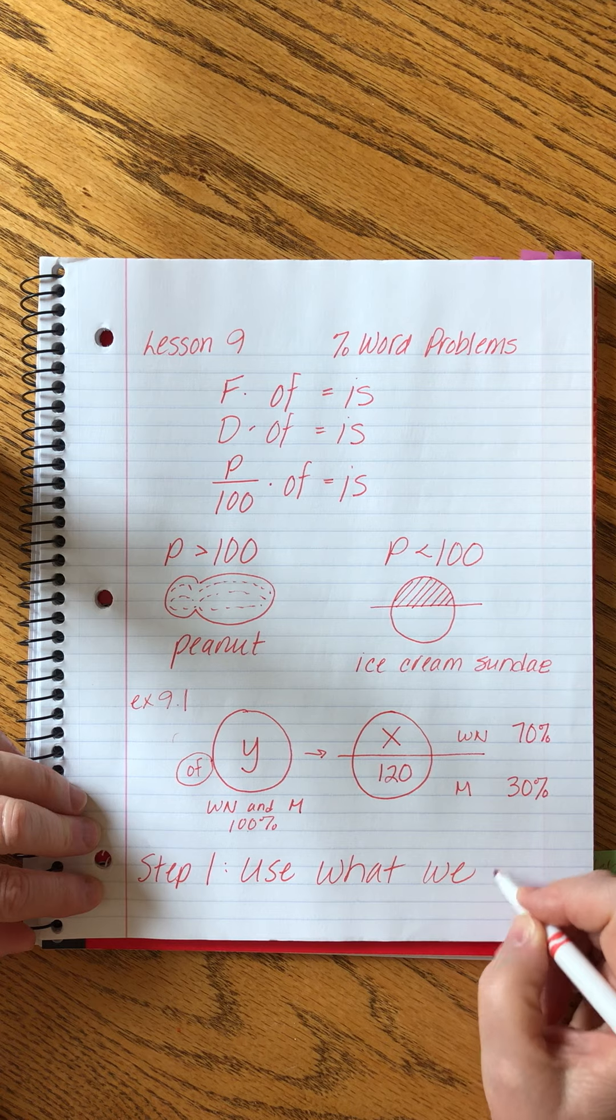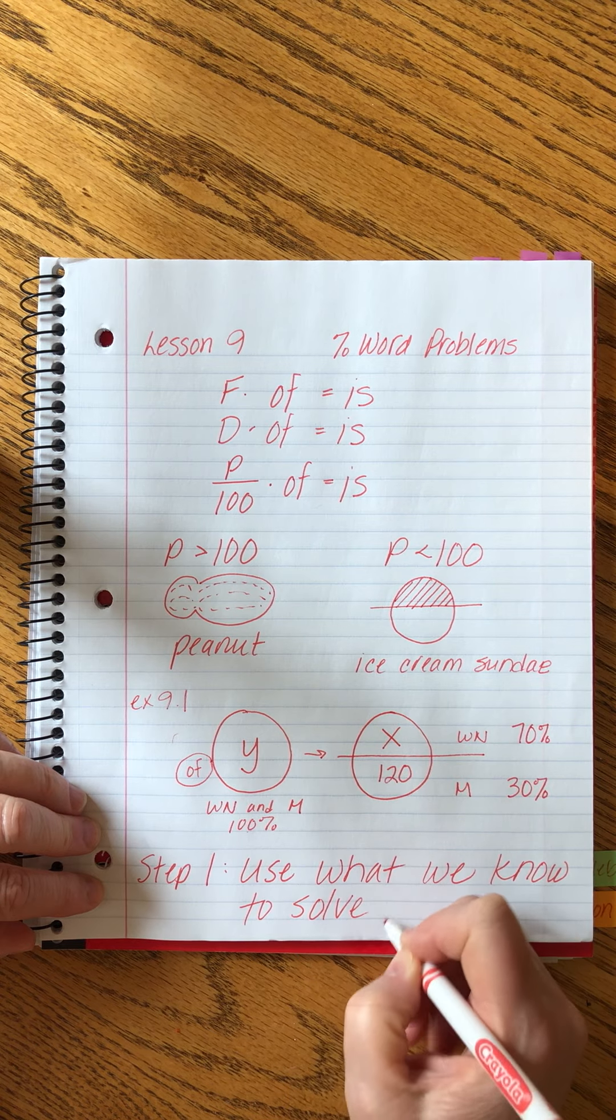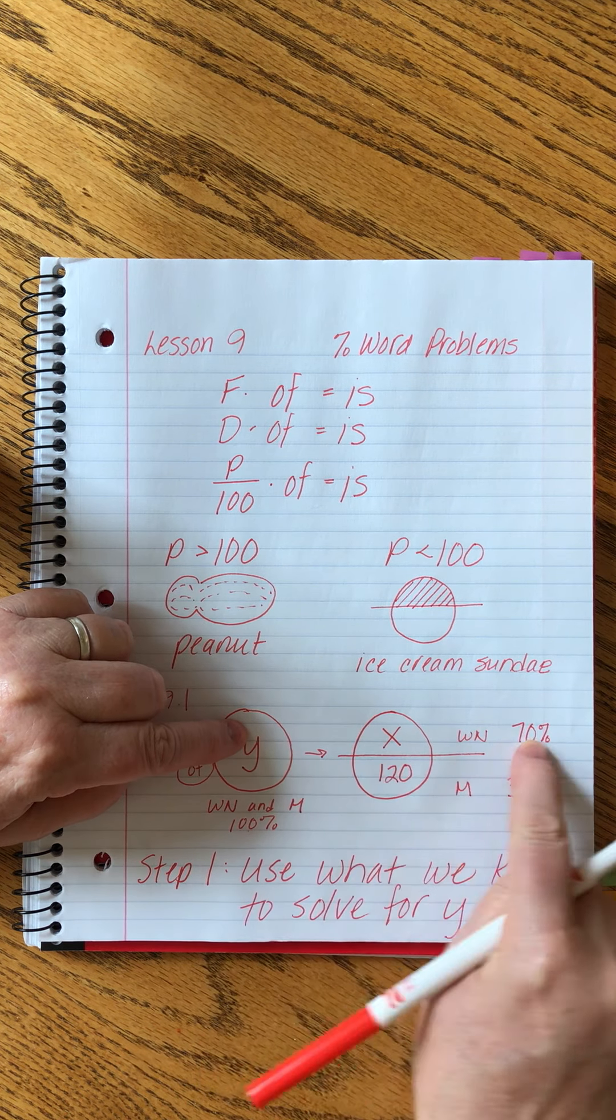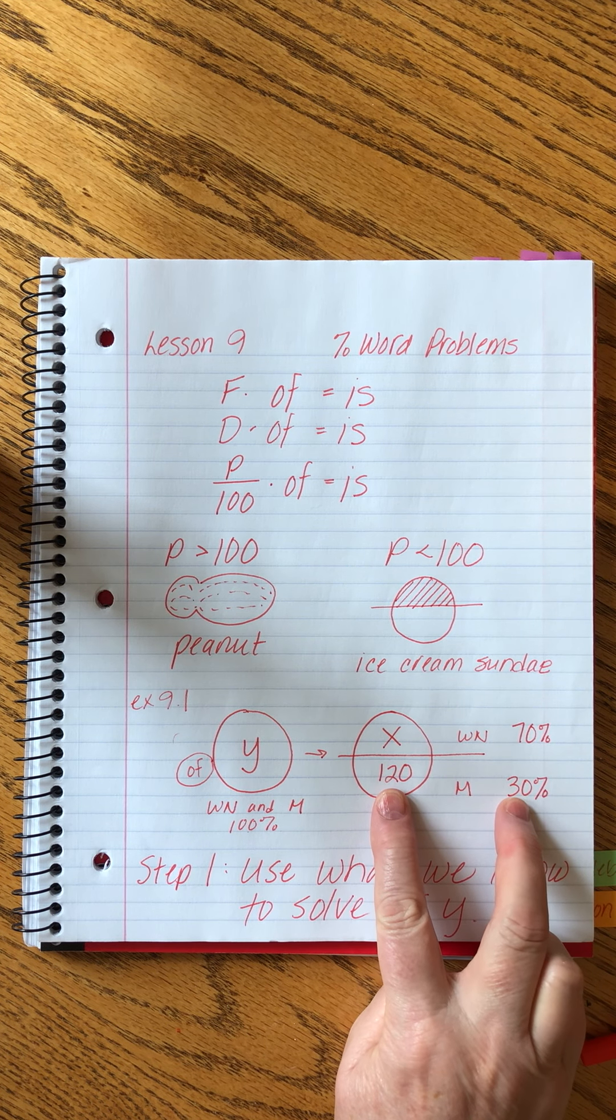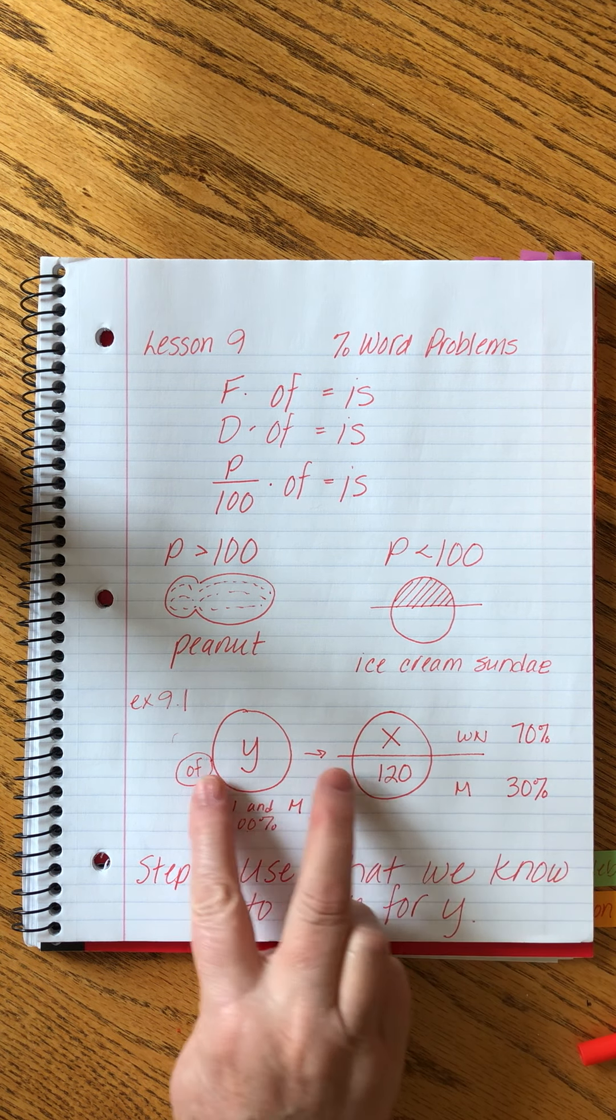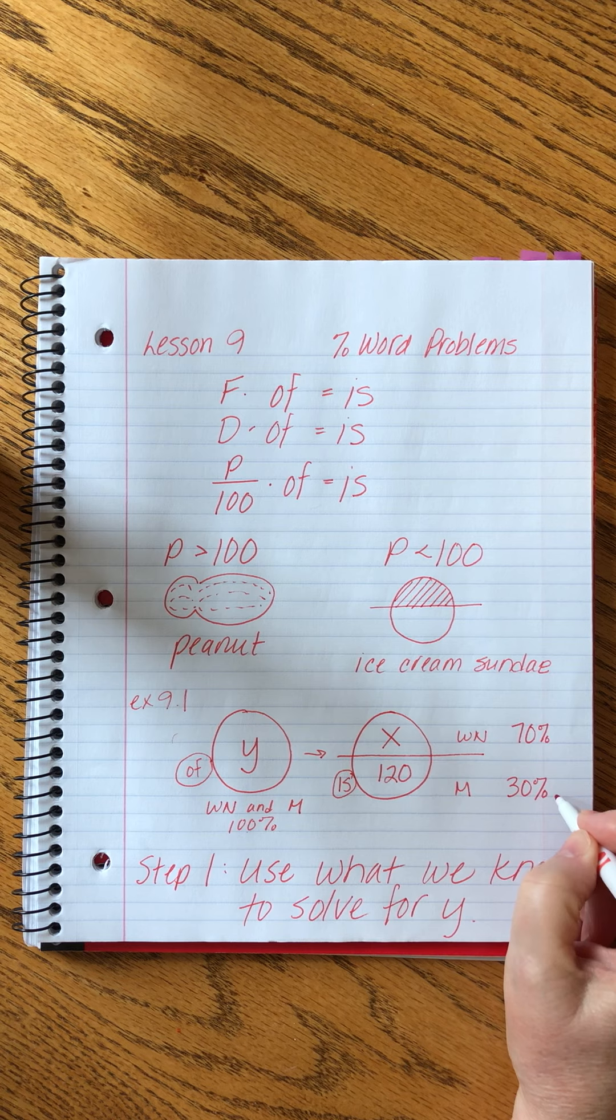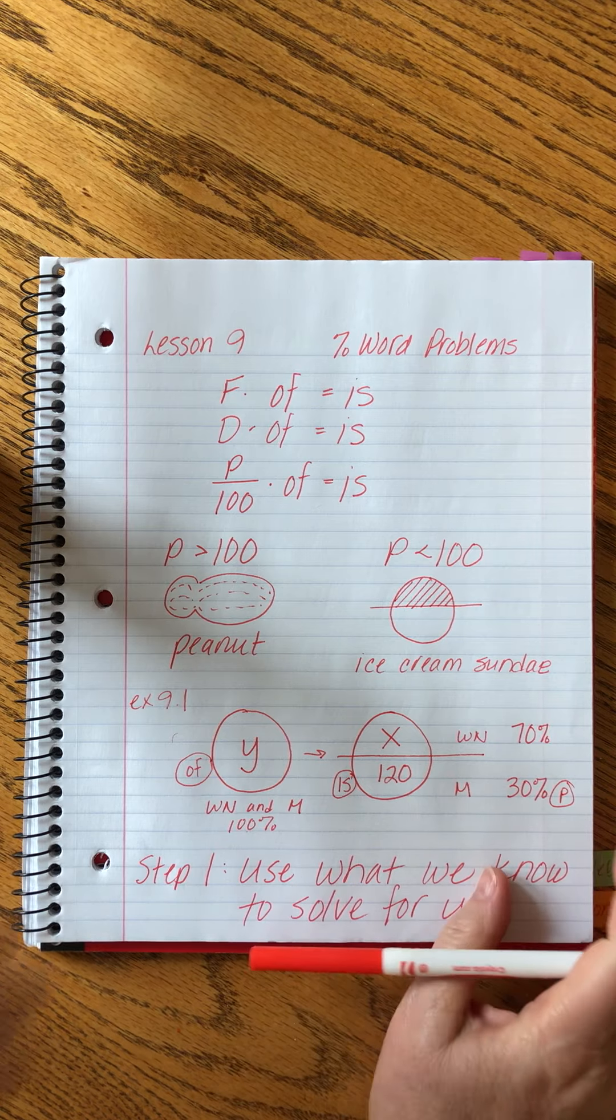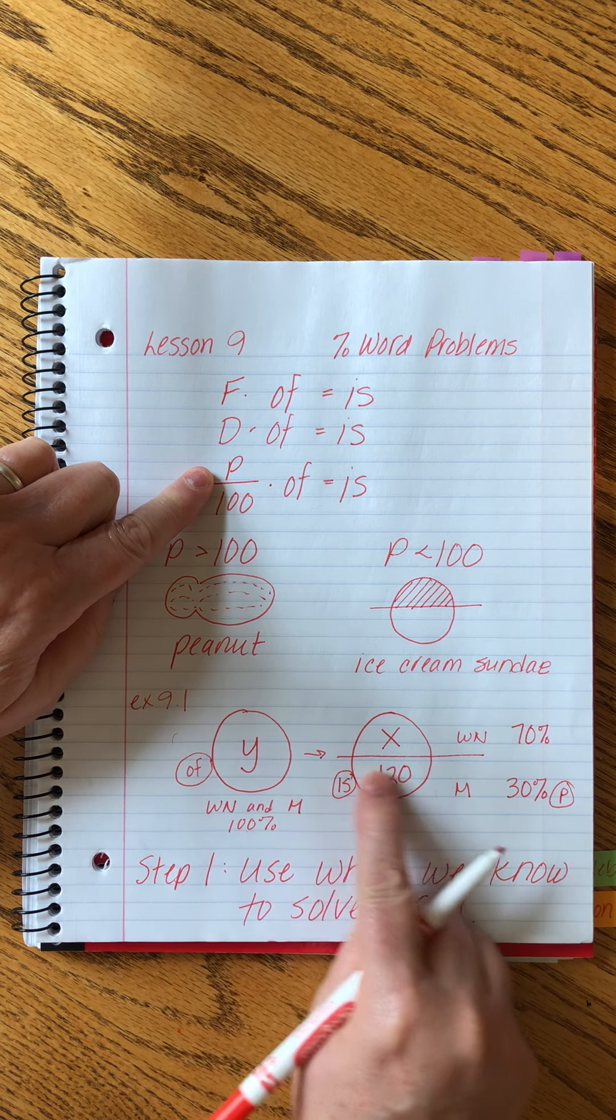First, I'm going to call it y just because it's fun. So the first thing that we want to do is use what we know to solve for y. Then once we have this number, we'll use this number to solve for x. But we have to look at this data first. This is going to be our first set of is information because we'll be able to use that to solve for y. We'll have two of the three pieces. So we're going to use this as our is number first. And we'll use this as our percent to solve for of, and then we'll have a step two.